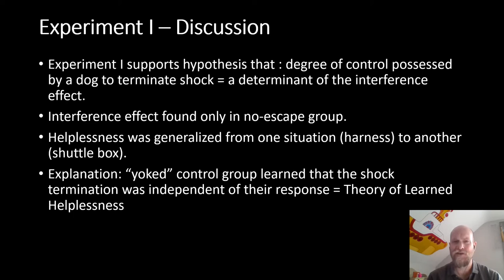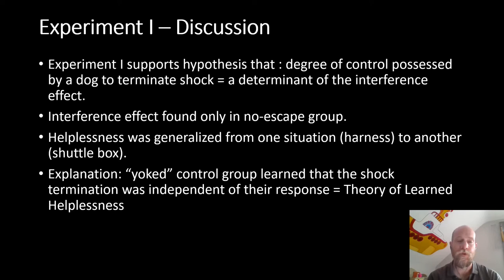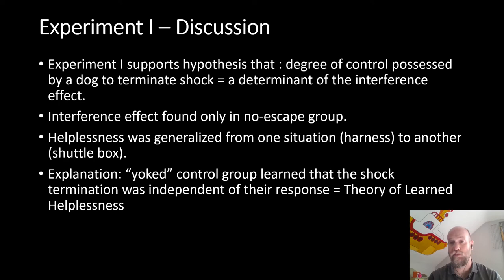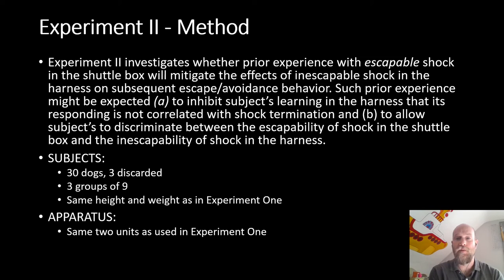The discussion of Experiment One supports the hypothesis that the degree of control a dog possesses to terminate shock is a determinant of how much interference it displays subsequently when given a chance to escape or avoid shock. Interference was found only in the yoked control group. Importantly, helplessness was generalized from one situation — the harness — to another — the shuttle box — showing that the experience of learned helplessness transfers to a new environment, which is very telling for the theory.